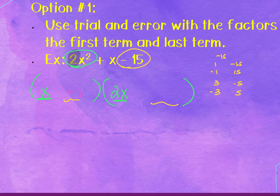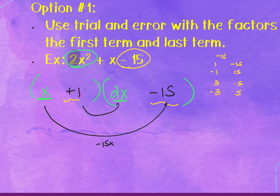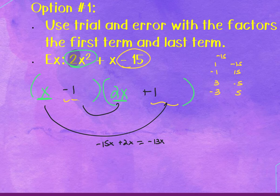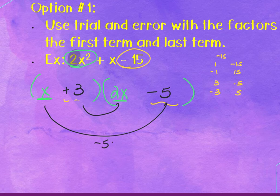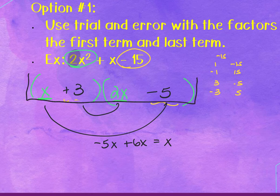For 2x² + x − 15, testing factor pairs of negative 15: try (x + 1)(2x − 15): outer × inner = −15x + 2x = −13x. Not right. Try (x − 1)(2x + 15): gives 15x − 2x = 13x. Still no. Try (x + 3)(2x − 5): outer is −5x, inner is 6x, sum is +x. That matches, so this is the correct combination.